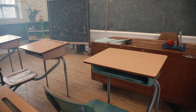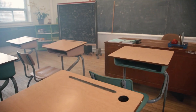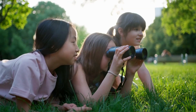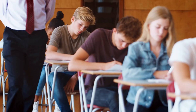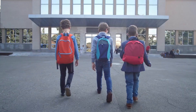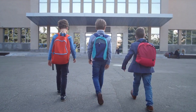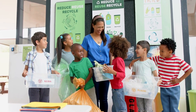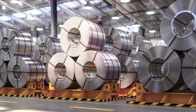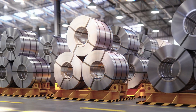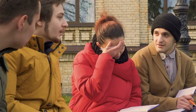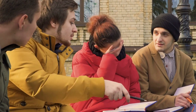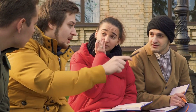Just look around your classroom or your home. What do you see? A chair, a notebook, your pen, your school bag. All these things are made of different materials like wood, plastic, cloth, or metal. And that's what this chapter is all about — materials around us.